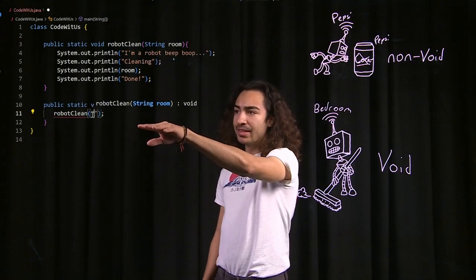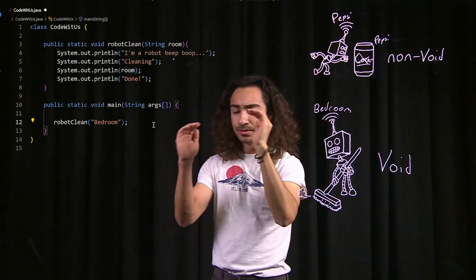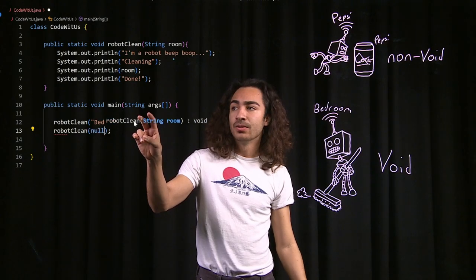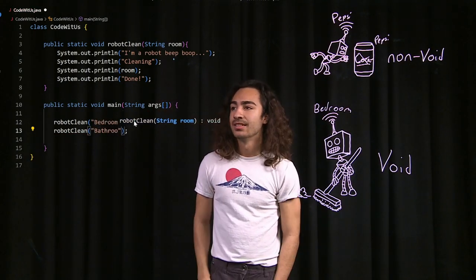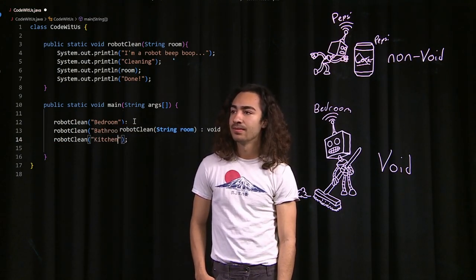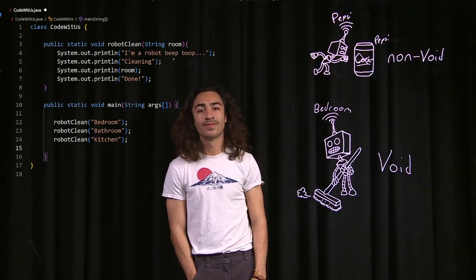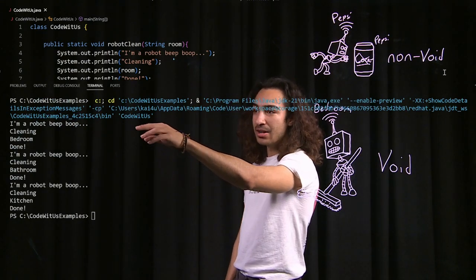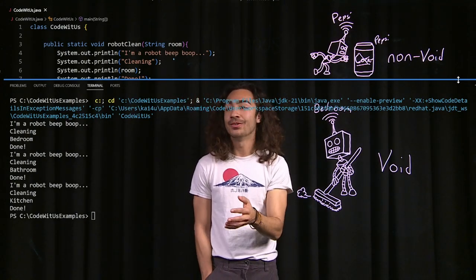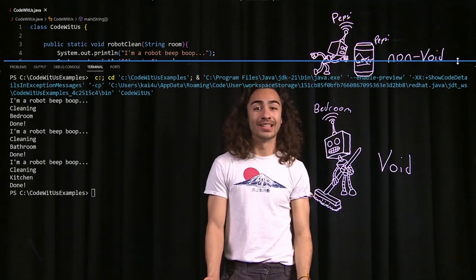Here we are calling our method. The way you call a method is you just put the name of the method and then put your parameters in the parentheses. This is for a void method, so we're not getting anything back. We're going to send in 'bedroom', 'bathroom', and 'kitchen'. We run it and, as you can see, it cleaned our bedroom, bathroom, and kitchen — the same output as before, but with less lines of code and way easier to read. You could just look at the name of the method and know exactly what it does.